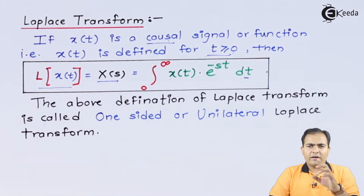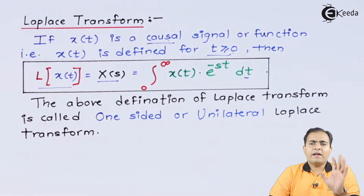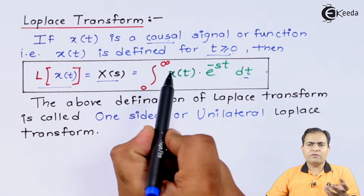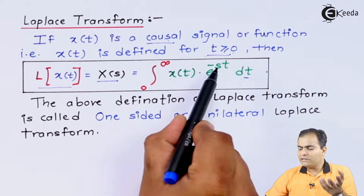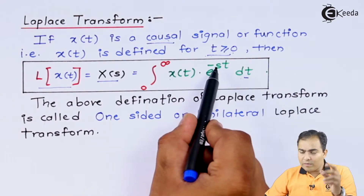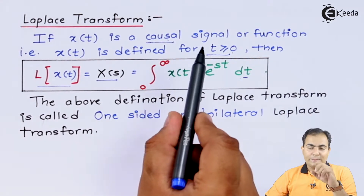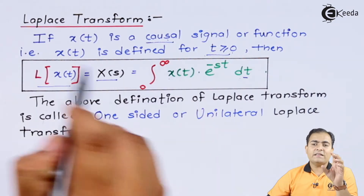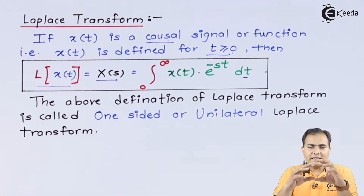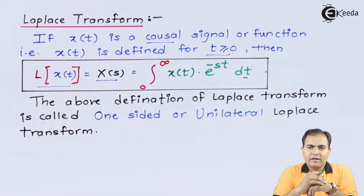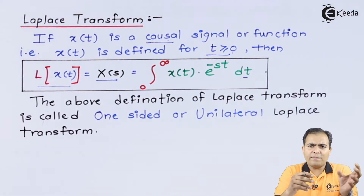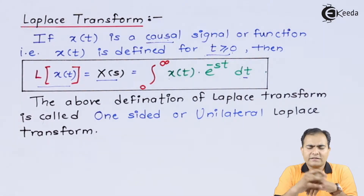Now, what do we mean by S? Because X(T) is known — it is the input signal — the exponential and time T are known. But what does S mean? Basically, S is the complex frequency.